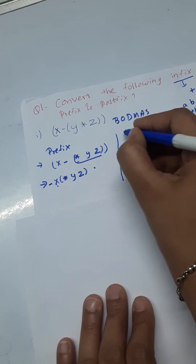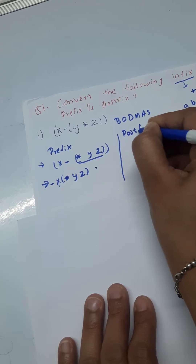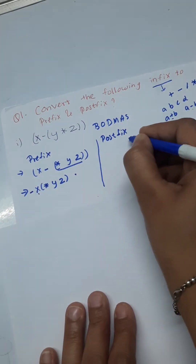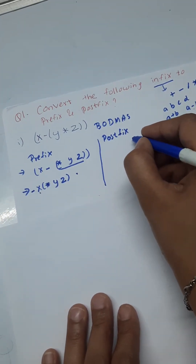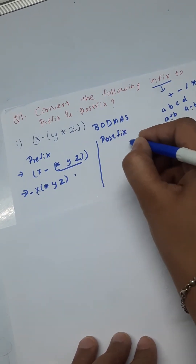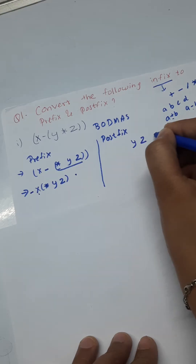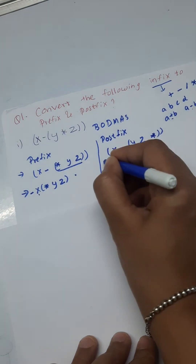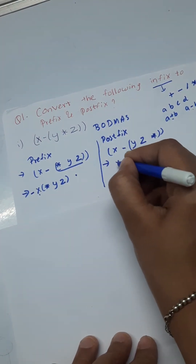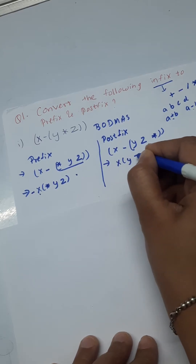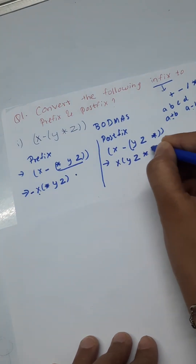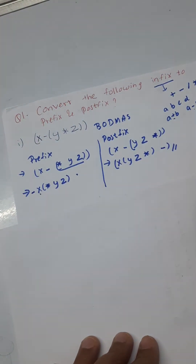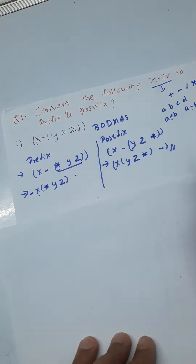Now for postfix, we again apply BODMAS. We write Y, Z, and the multiplication symbol, keeping the rest as is. In the next step, we write X, then Y Z multiplied, then put the minus symbol. So this is the answer for the given infix expression in postfix notation.